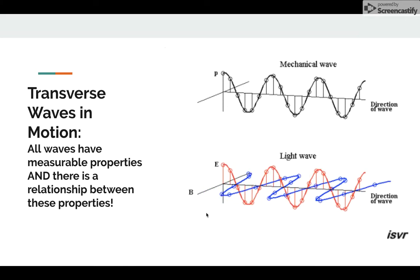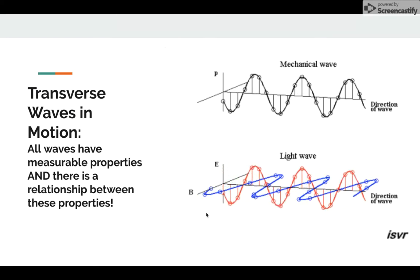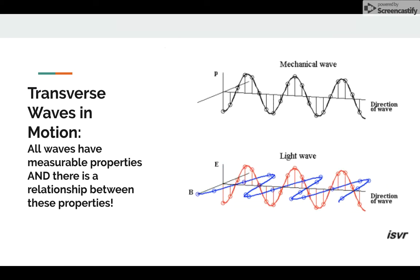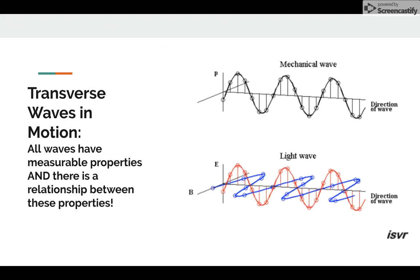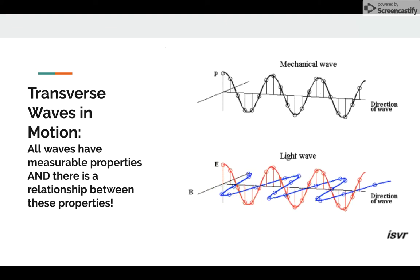However, all moving waves have a measurable speed, a wavelength, and a frequency. So today we're going to talk about how these three measurable properties are related together in an easy-to-use mathematical formula.